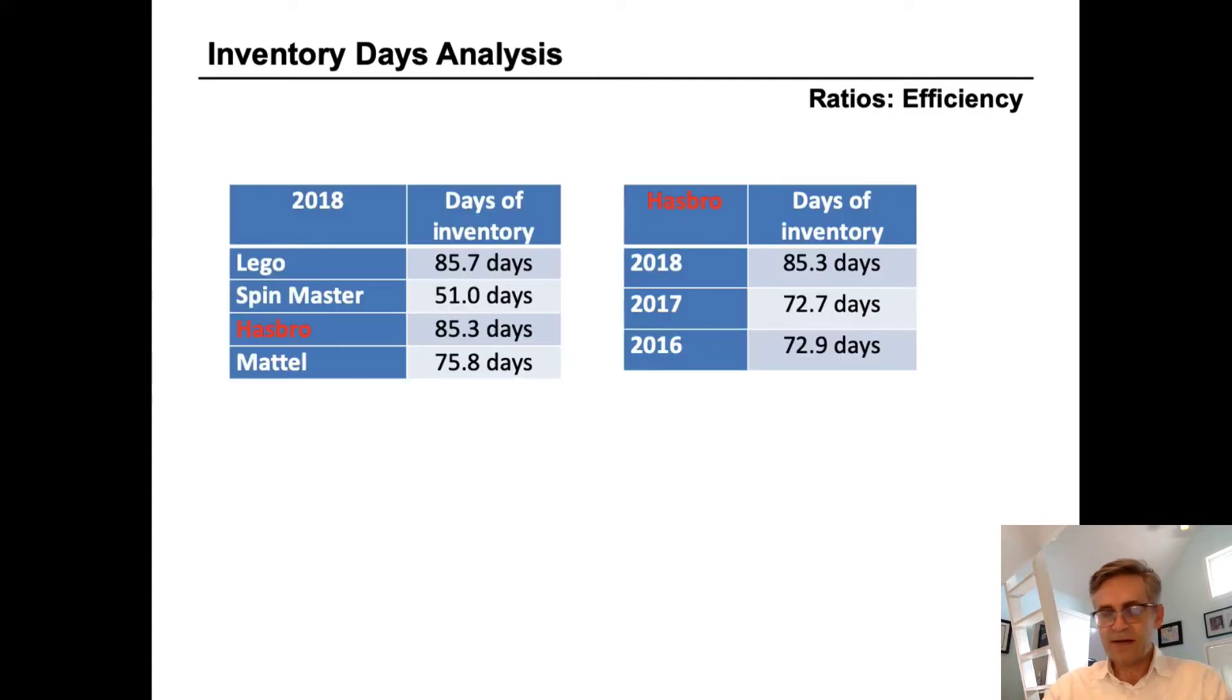Well, when we compare Hasbro to its peers in the same business, we can see that their 85.3 days for Hasbro is toward the high end of the industry. Spin Master is the lowest at 51 days. Hasbro is very similar to Lego at also at 85 days and Mattel is pretty close at almost 76.